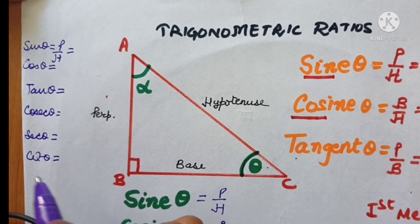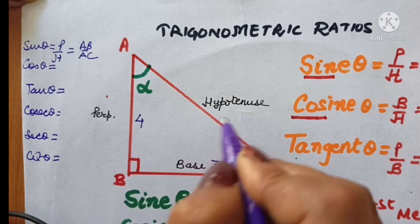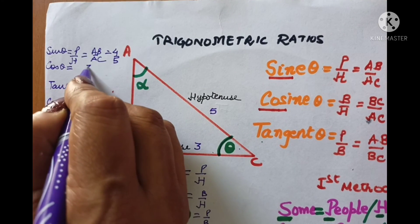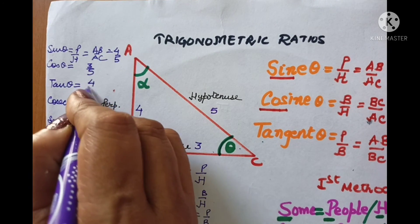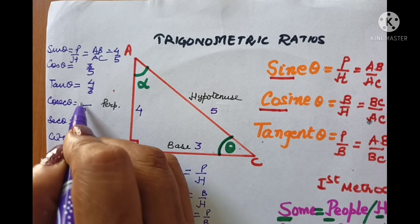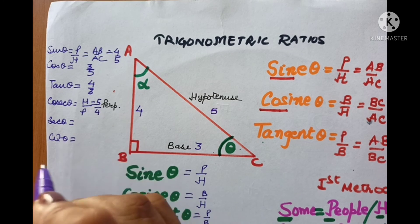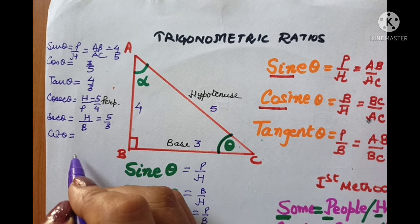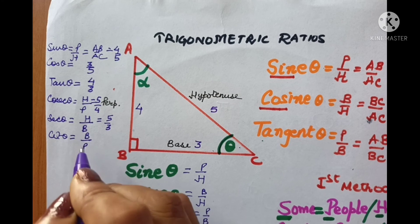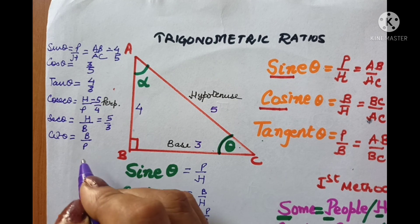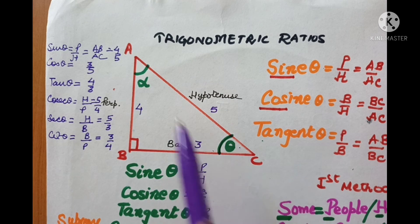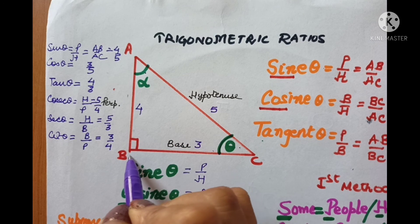Let us take a 3-4-5 triangle and write all six values. Sine theta: some people have — 4 by 5. Cos theta: curly brown hair — 3 by 5. Tangent theta: proper brush — 4 by 3. Cosecant theta is reverse of sine: 5 by 4. Secant theta is reverse of cos: brown hair — 5 by 3. Cotangent is reverse of tangent: proper brush in reverse — 3 by 4. If you have to write the values for alpha, just reverse: AB becomes the base and BC becomes the perpendicular.